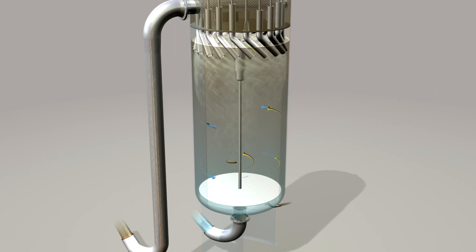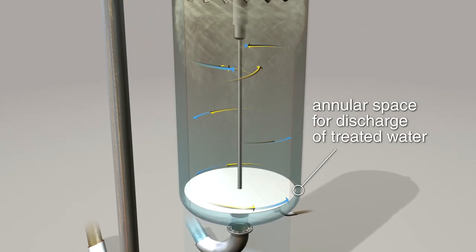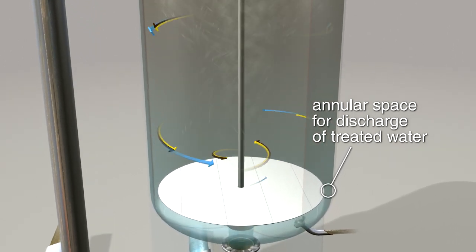The cleaned water, now travelling in a falling path down the vessel wall, exits through the annular space between the vessel wall and the bottom plate.